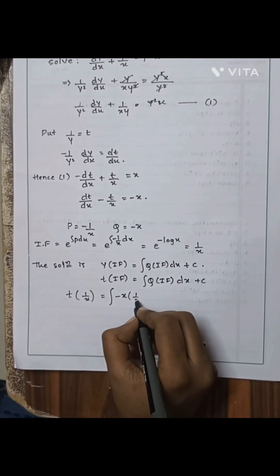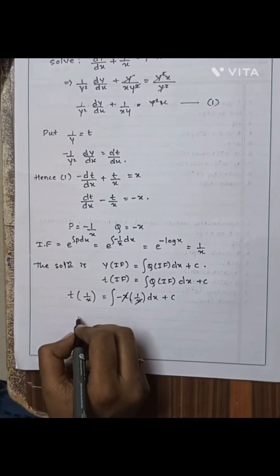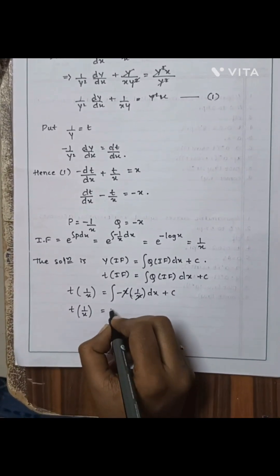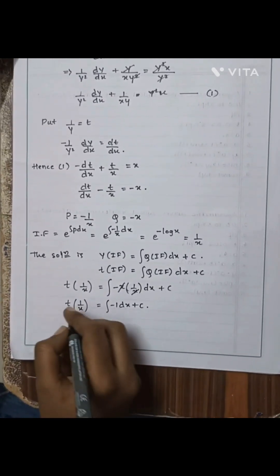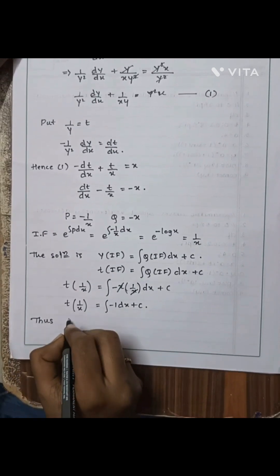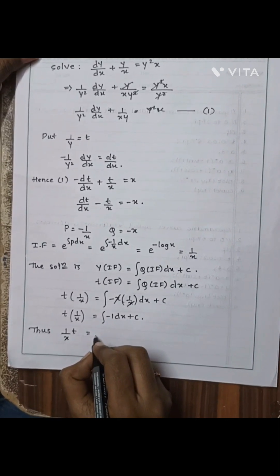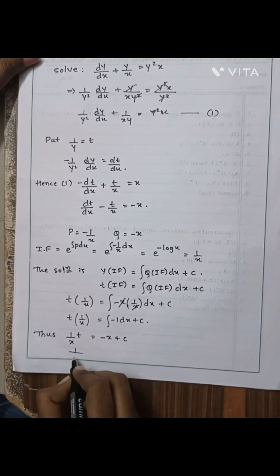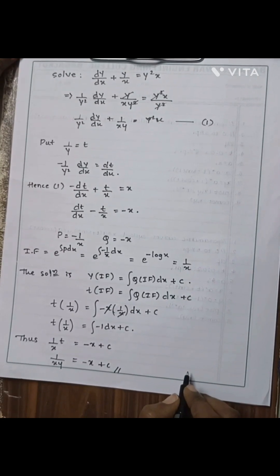Here x and x get cancelled, giving us t/x = ∫(−1) dx + C. Thus t/x = −x + C. Substituting back t = 1/y, we get 1/(xy) = −x + C. This is the required solution.